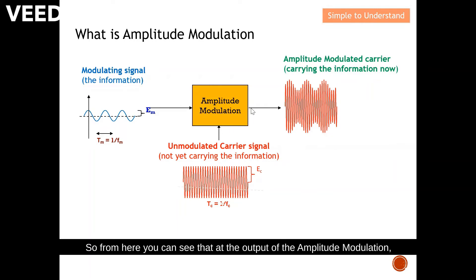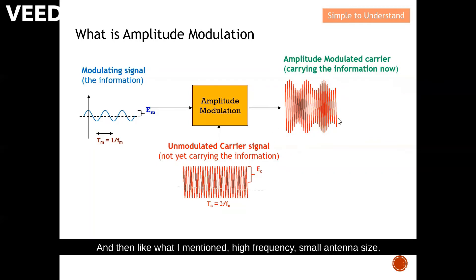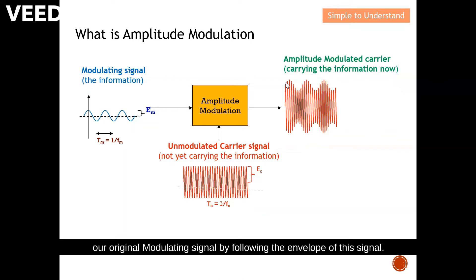At the output of the amplitude modulation, we have the modulated signal. This modulated signal actually carries the information now. As I mentioned, you can see from this modulated signal that it has a high frequency — in fact, the frequency is exactly the same as the carrier. With high frequency, we get a small antenna size. Also, we can easily recover our original modulating signal by following the envelope of this signal.